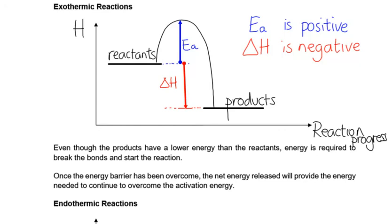This is describing an exothermic reaction. There's a sentence that says once the energy barrier has been overcome, the net energy release will keep it going. So once you've lit your Bunsen burner, you don't need to keep lighting matches to keep it alight. It will keep itself alight.